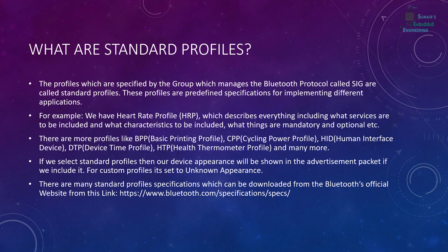So what are the standard profiles? The profiles which are specified by the group that manages the Bluetooth protocol, called the SIG, as I have mentioned before. If you haven't seen my tutorials from tutorial number 40 onwards, kindly see those to understand these concepts. These profiles are predefined specifications for implementing different applications. For example, we have a Heart Rate Profile (HRP) which describes everything — what services to include, what characteristics to include, what things are mandatory and what things are optional.